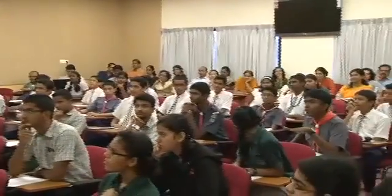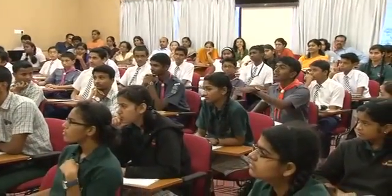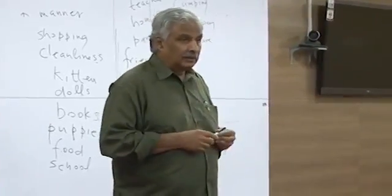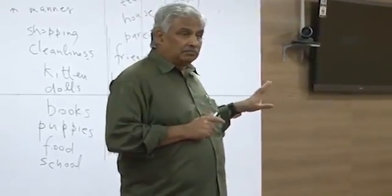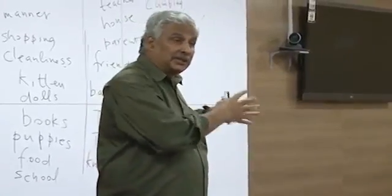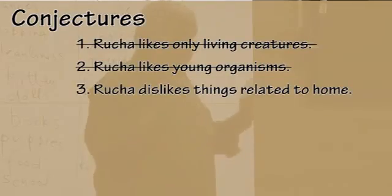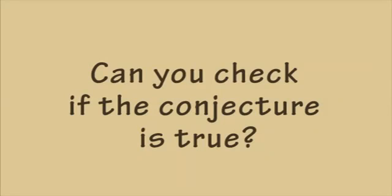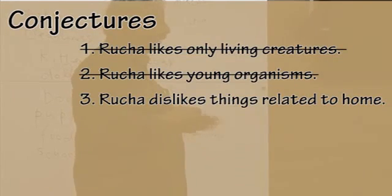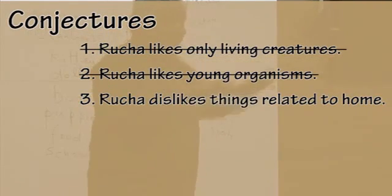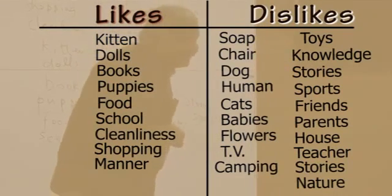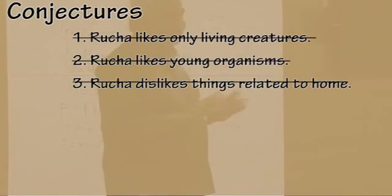Does she like to be alone? What's your conjecture? She doesn't like to be at home with her parents — she dislikes things related to home. Okay, she dislikes things related to home. Now check if it is true. Look at the board and tell me if your conjecture is true. Partially — so that doesn't work.